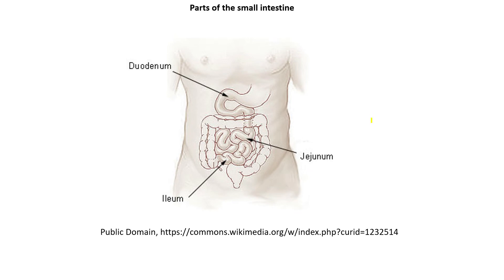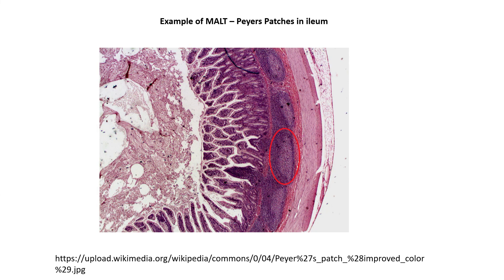Next, we're going to shift gears and talk about an example of MALT found in the intestine. We have the duodenum, jejunum, and ileum — the parts of the small intestine — and we are going to zoom in on the ileum. These aggregations of lymphoid tissue are called Peyer's patches, and these are only found in the ileum. So if you see aggregations of lymphoid tissue in intestinal epithelium — which would be simple columnar epithelium — that should really clue you in that you're in the ileum.